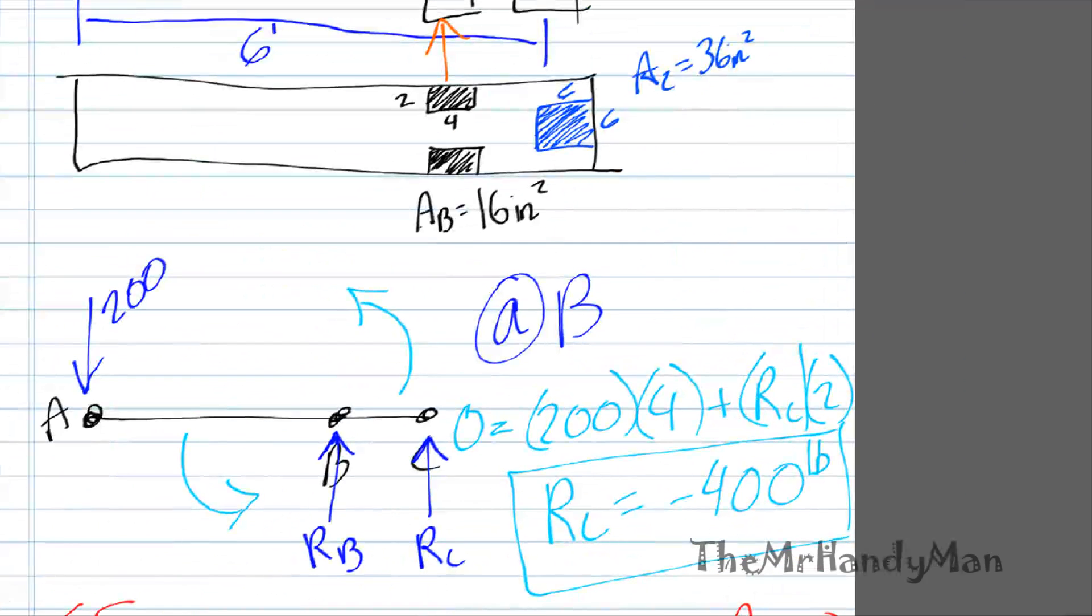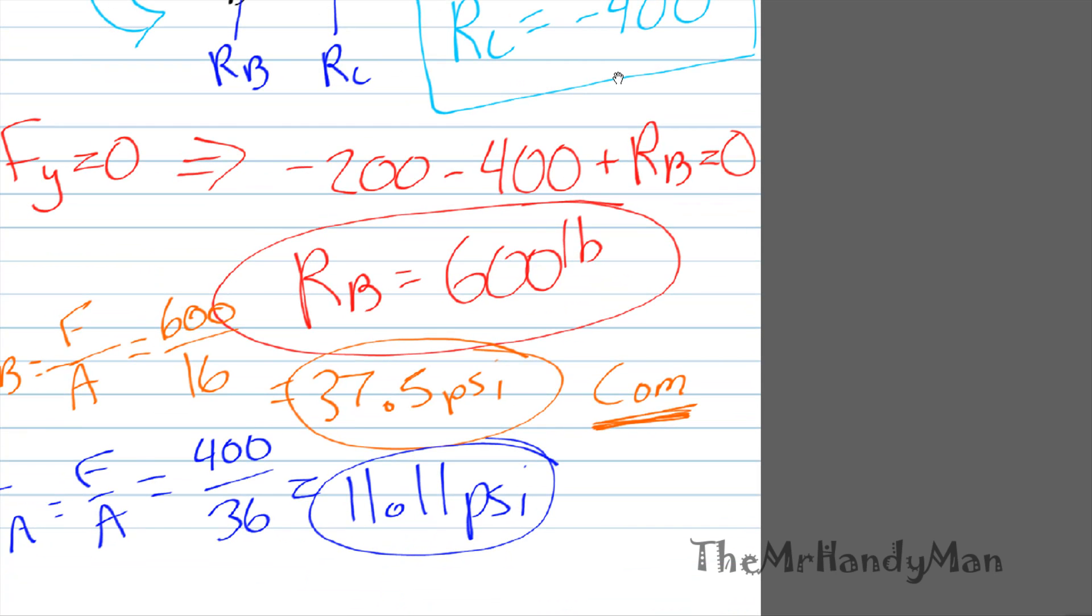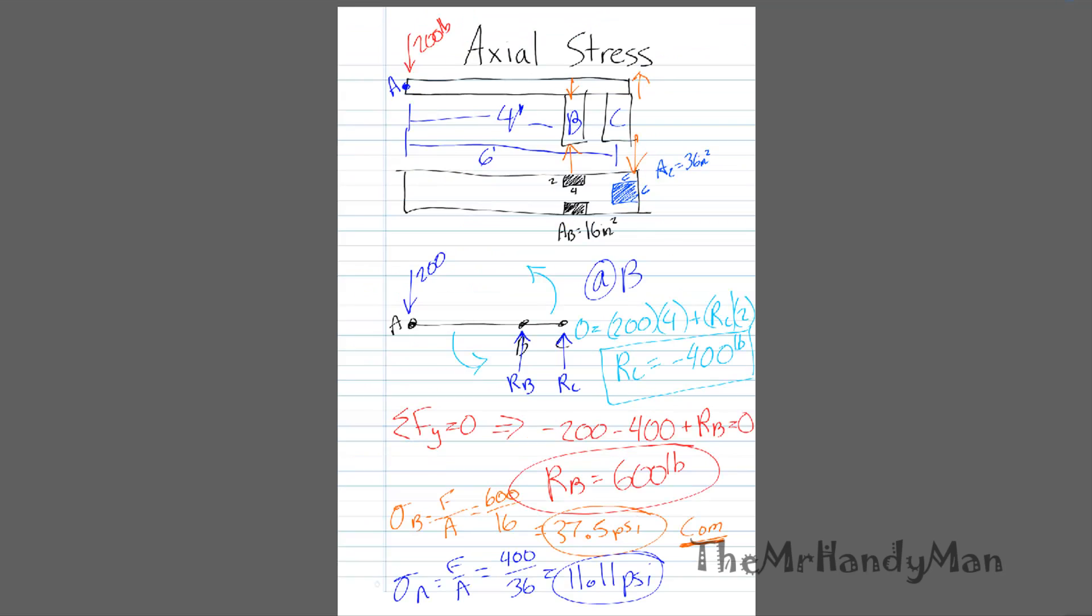Conversely, the reaction force is going to be downwards. So looking at the picture again, C is being pulled down by the ground, thus the board must be pulling up. That is tension. So realize that you have 11.11 PSI in tension.